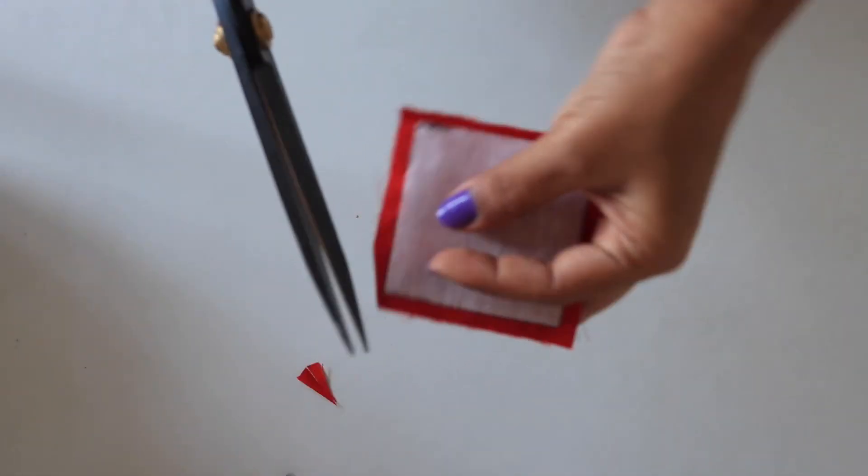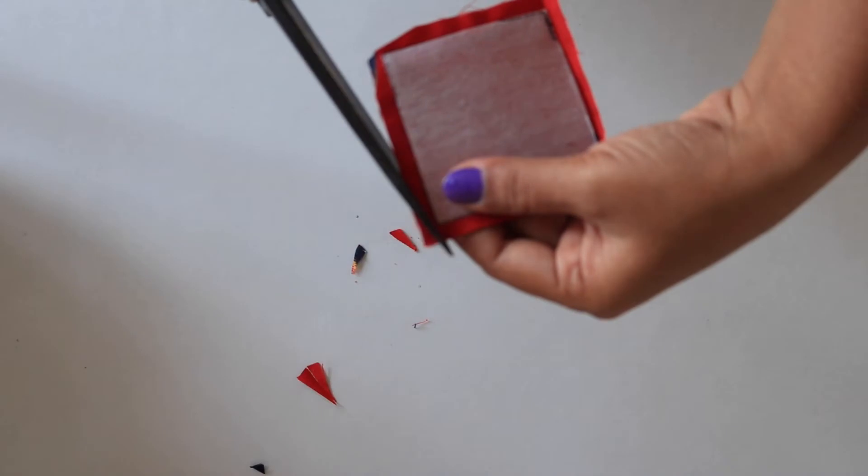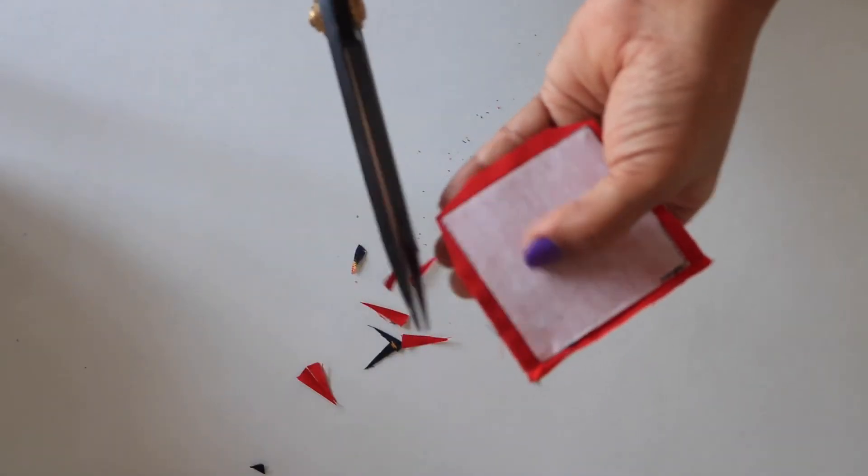Now with the help of scissors, carefully trim the corners and through this opening turn right side out.